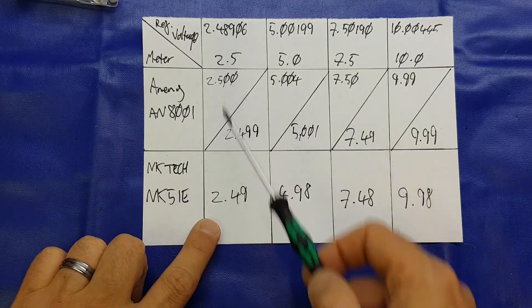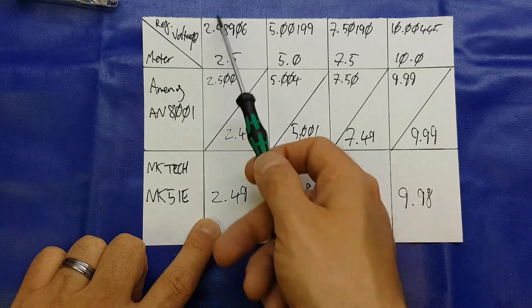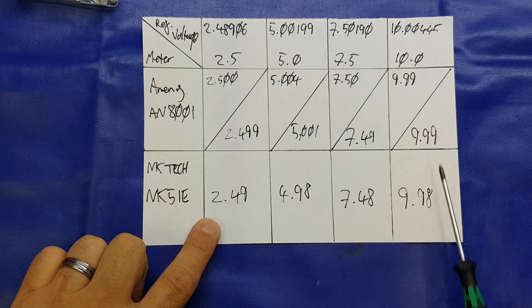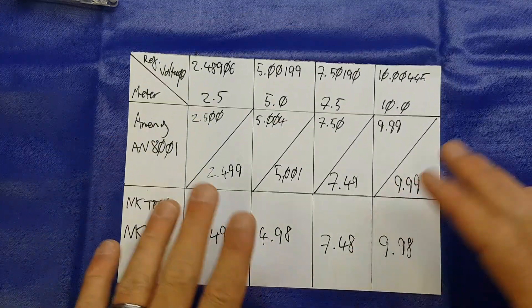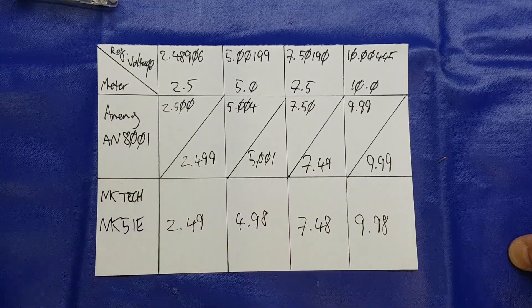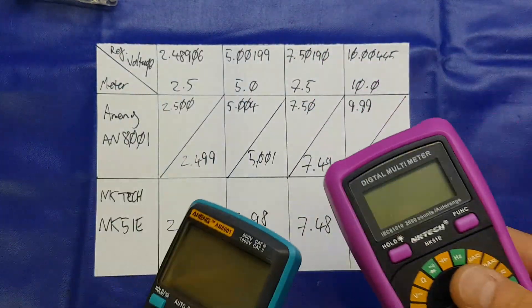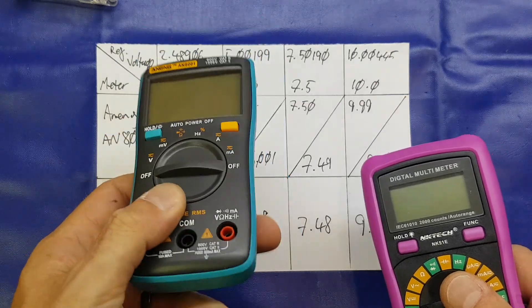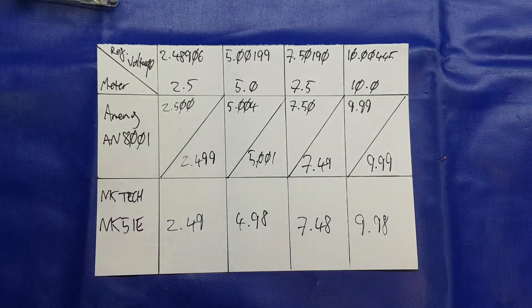I did exactly the same test with the NK Tech, the NK51E. 2.49, so 0.001 out. 4.98, 0.02 out. 7.48, 0.02 out. And 9.98, 0.02 out. Look guys, I've said it 100 times before, it's a budget multimeter. 0.02 volts will make zero difference to your project, I can assure you of that. So make your own mind up. I certainly would suggest that the Aneng, as it stands in my non-scientific experiments, remains king of the budget multimeters. I think I will get the other models and test those for accuracy as well.